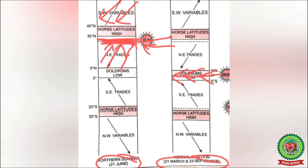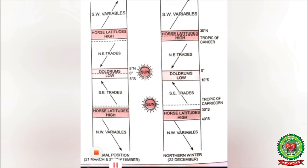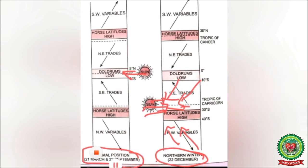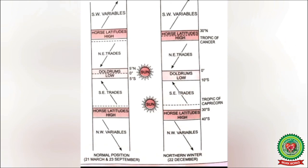This is the shifting of pressure belts in the month of June towards north. In the second case, in December — on 22nd December — the sun rays are vertical on the Tropic of Capricorn, which passes through Australia. So all the pressure belts shift towards south, and hence the southeast trade winds start blowing towards Australia while the westerlies blow towards south of Australia and South America. In this way, pressure belts in winter shift towards south.